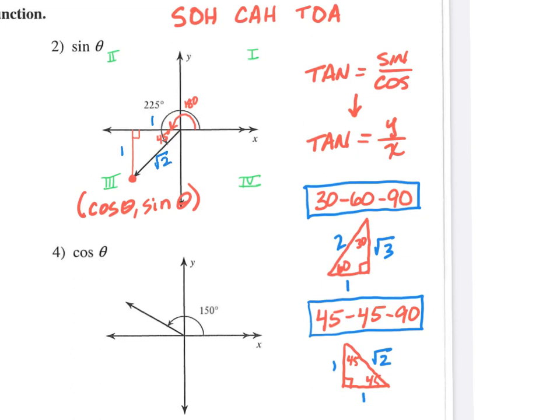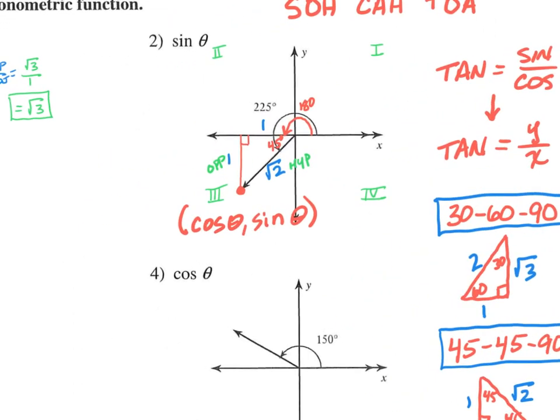And then lastly, sine is opposite over hypotenuse. The opposite side is 1. The hypotenuse is root 2. So that means sine would be opposite 1 over root 2.